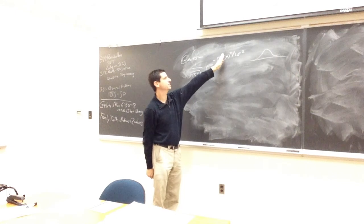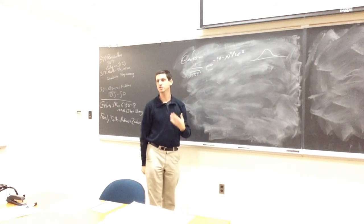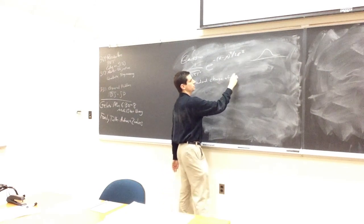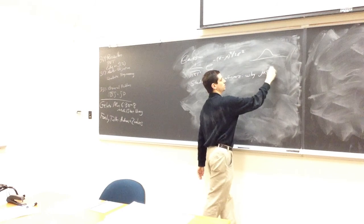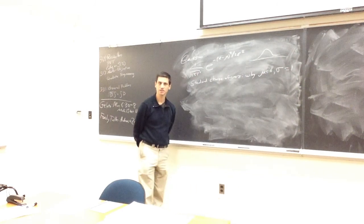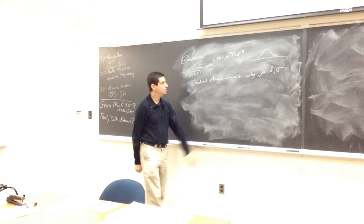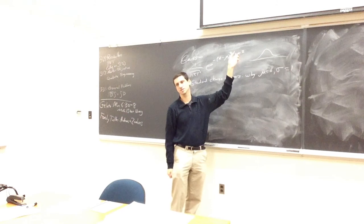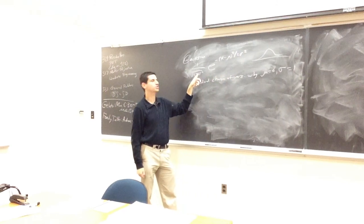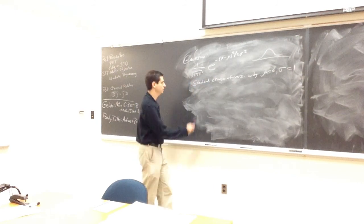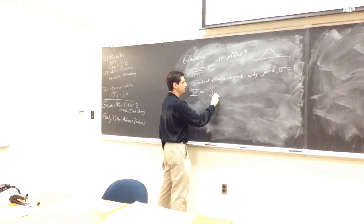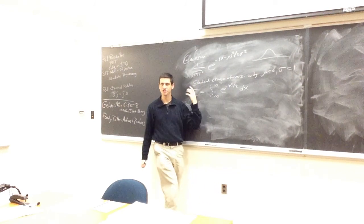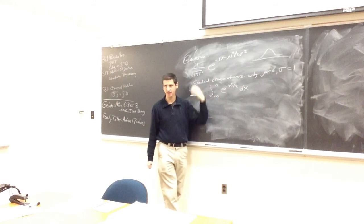We will assume μ = 0 because when we're trying to integrate, it's not so bad. You can also change variables and assume σ = 1. Standard change of variables — without loss of generality, μ = 0, σ = 1. If you can handle that case by changing variables, you can handle the general case. So we just need to prove that in that case it integrates to 1. Let I be the integral from −∞ to ∞ of e^(−x²/2) dx. The goal is to find what the value of this integral is.